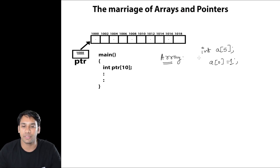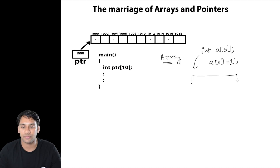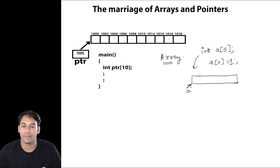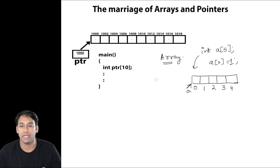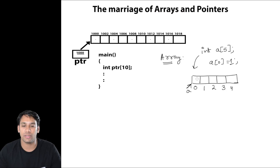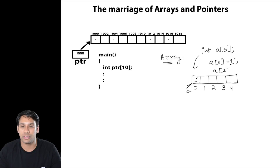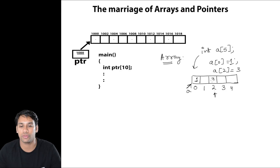Let me just draw this graphically. So if I write int a[5], this is the variable a and these are 5 index locations: index location 0, 1, 2, 3, and 4. When I do a[0] = 1, I am storing 1 into index location 0. When I do a[2] = 3, I am storing 3 in index location 2.